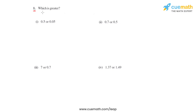Question number one says to find which is the greater in each of the given bits, so we've got decimals here. To find which is greater and which is smaller, we'll try to get the decimals into their equivalent fractions, and once we have the equivalent fractions, we'll convert them into like fractions so that we can directly compare the numerators and decide which is greater and which is smaller.